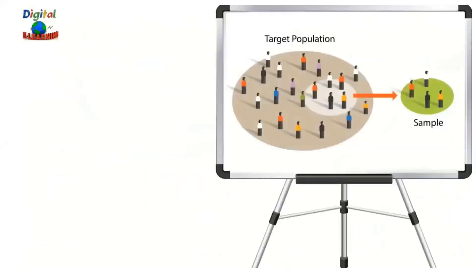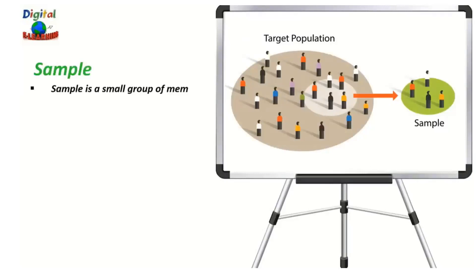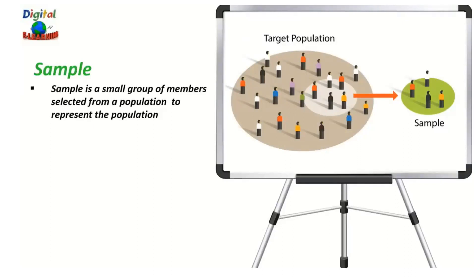Before we understand sampling and its types, let us first understand the difference between population and sample. Sample is a small group selected from a population to represent the entire population. When you conduct research about a group of people, it is almost impossible to collect data from every person in that group. Instead you select a sample — a group of individuals who will actually participate in the research and represent the entire population. A sample is basically a subset of a population.